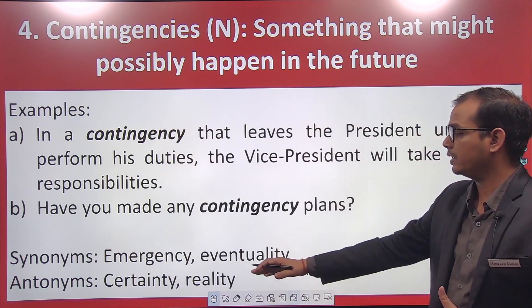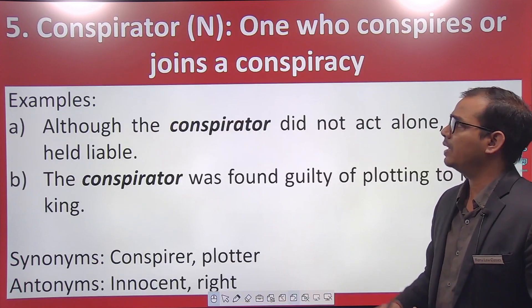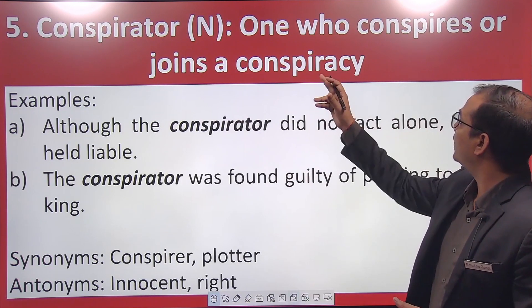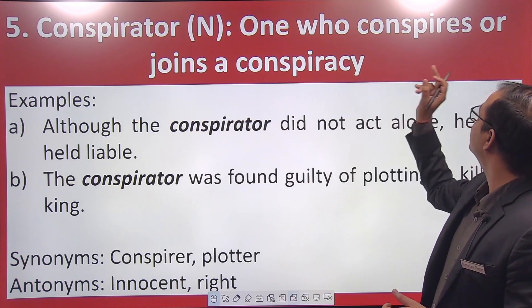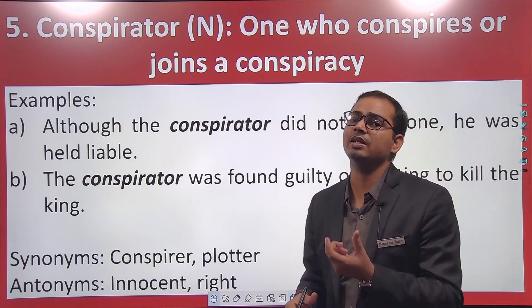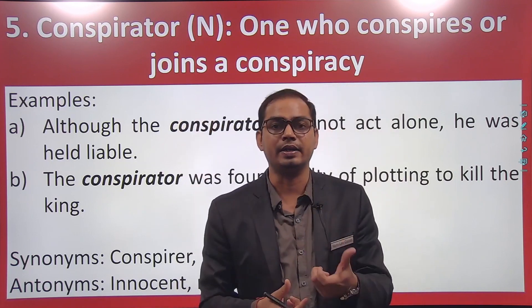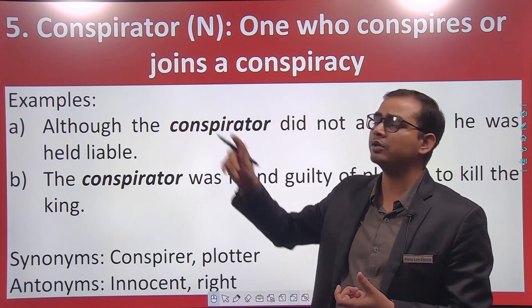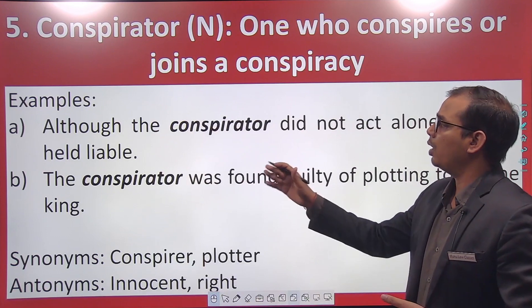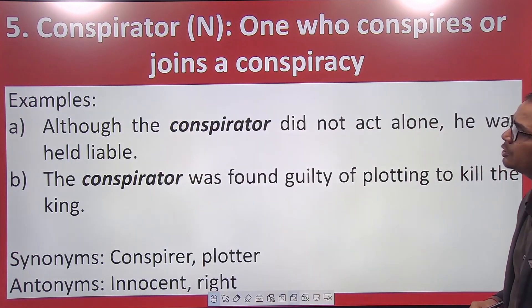Antonyms of contingency are 'certainty' and 'reality.' The last word in the list is 'conspirator.' Conspirator means one who conspires or joins a conspiracy. Conspiracy means sadiyantra and conspirator means sadiyantrakari — they are related terms. For example, although the conspirator did not act alone, he was held liable.